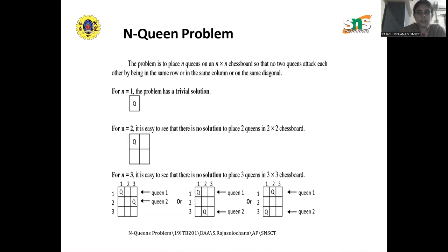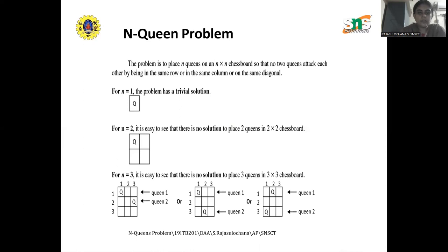For example, if n equals 1, the only one possibility exists — this is called the trivial solution. If n equals 2, you take a 2×2 chessboard and there is no possibility for placing two queens at all, so there is no solution. For n equals 3, there is also no solution because only two queens can be placed without attacking each other, as you can see on the screen, without violating the conditions specified.